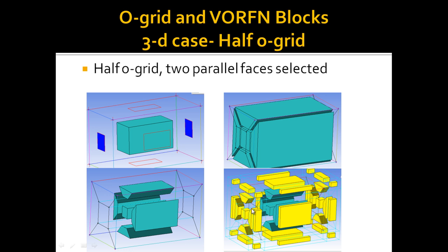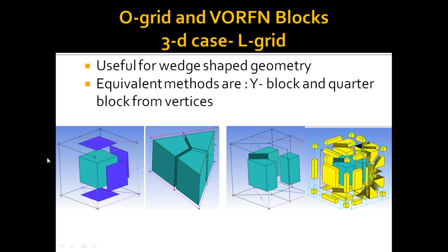The L-Grid is useful for geometry shapes which have a base shape. In this case, although the geometry has a triangular shape, we are still able to create a hexagonal mesh. The equivalent methods are the Y-Block and the quarter O-Block from vertices — the latter is a bottom-up approach and will not be discussed here. The first figure shows how faces should be selected for the L-Grid, the second shows the shape after the operation with vertex adjustments, and the last figure shows the result after the Warframe blocks are displayed.